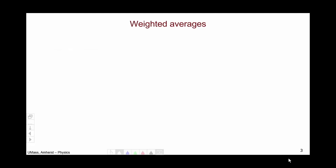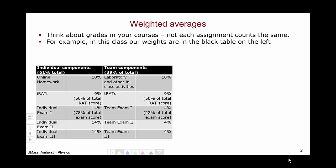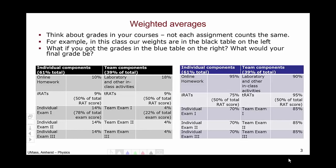So the first part of the definition of center of mass is a mass weighted average location of an object. Now this is a lot going on, so let's think about what a weighted average is first, in a context with which you are probably more familiar. Think about your grades. Not each assignment in a given course counts the same. For example, in this class the weights for the different assignments are provided in the black table on the left. Now if you got the grades in the blue table on the right, what would your final grade be in this particular course?